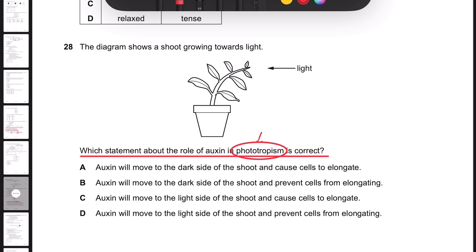The auxin promotes tropisms, and there are two types of tropisms. One is called geo or gravy tropism. The other one is called phototropism.